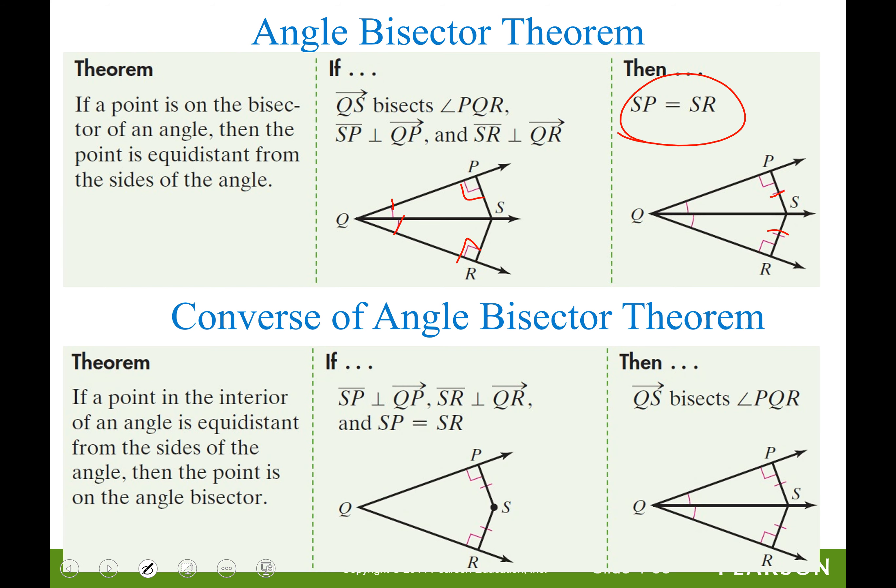The converse of the angle bisector theorem is also true. That is if we have the 90 degree marking, and we have that these two segments have equal measure, then we can connect the dots, create QS, and QS will in fact be an angle bisector. Having these markings will allow us to add this marking. That's the converse of the angle bisector theorem.